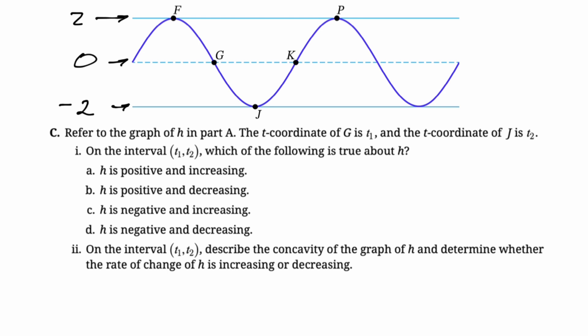Refer to the graph of h in part a. So I already imported the graph, and I just labeled the y values. It's positive two, then zero, then negative two. We need that because we're going to look at this thing on the interval from g to j. So I'm just going to highlight that so that we know what we're looking at. We're looking at this interval, and on the interval, which of the following is true about h? This is basically a multiple choice question. You can see the values of h are negative, so h is negative, and you're definitely decreasing. So h is negative and decreasing. That's all you got to do.